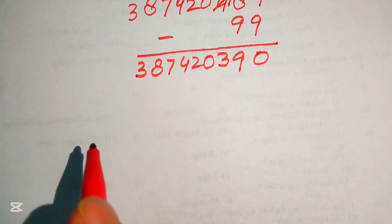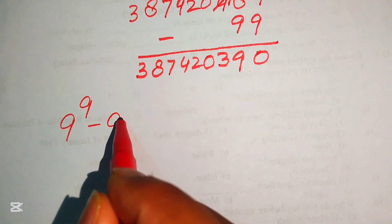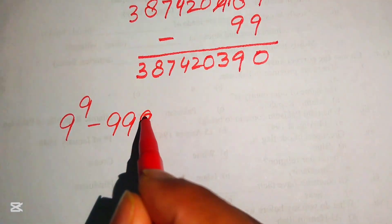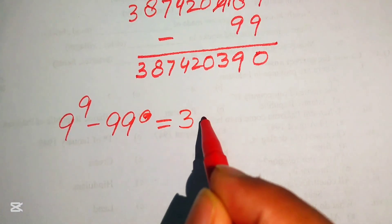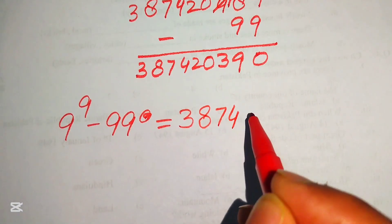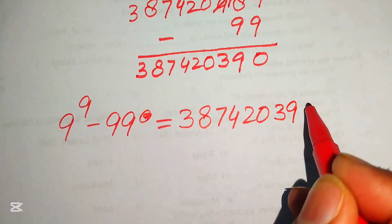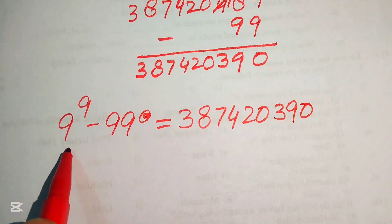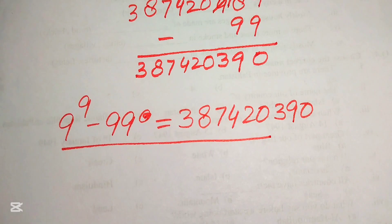Finally, the answer to 9 to the power of 9 minus 99 is 387,420,390. Thank you so much for watching this video — please subscribe to my channel for more exciting videos.